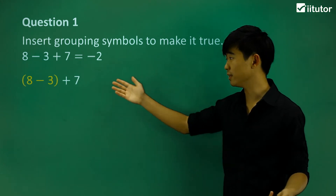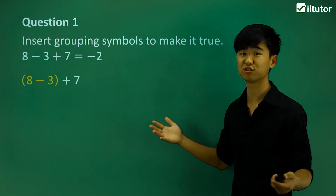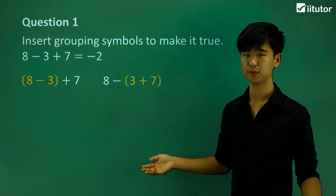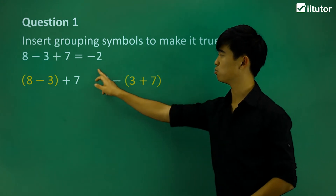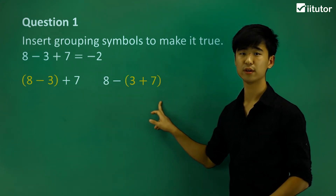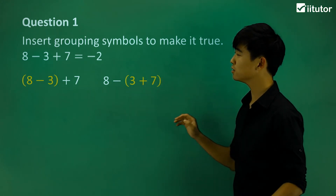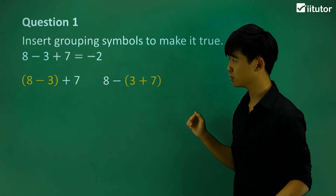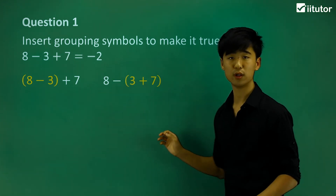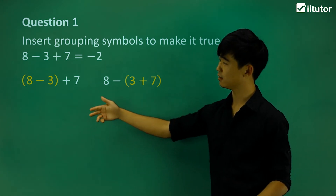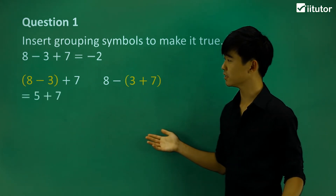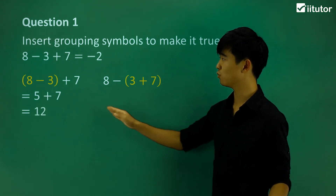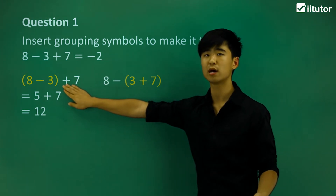Well, we can place it between 8 minus 3, or we can place it between 3 and the 7. The only other alternative would be to put brackets around the whole thing, but we know that isn't true from the start. So let's figure out what these two options give me. First, let's work out the left-hand side: 8 minus 3 is 5, and 5 plus 7 is 12. So that's not it — we want minus 2. So obviously these grouping symbols aren't the ones we're looking for.